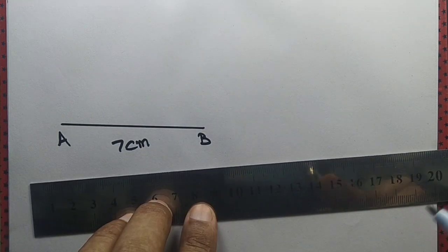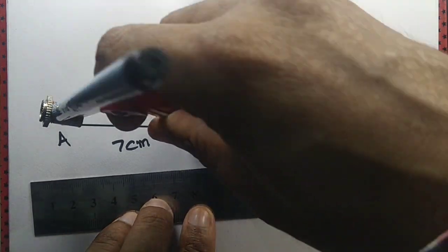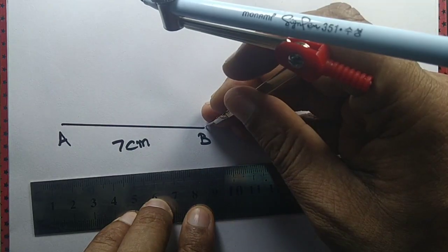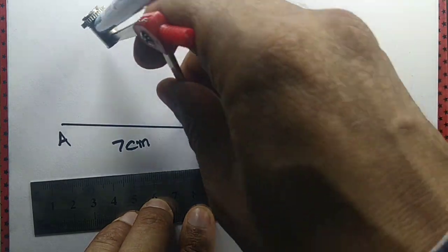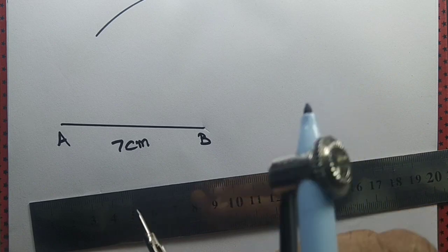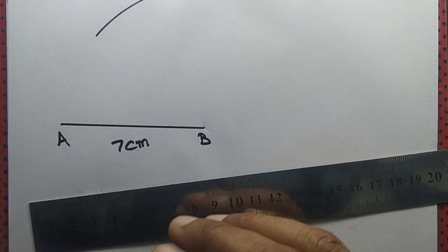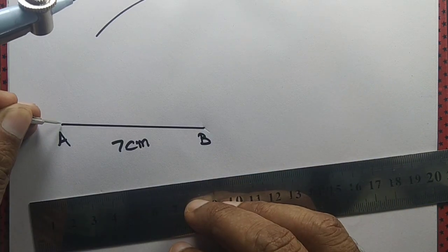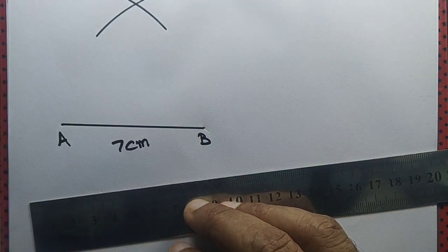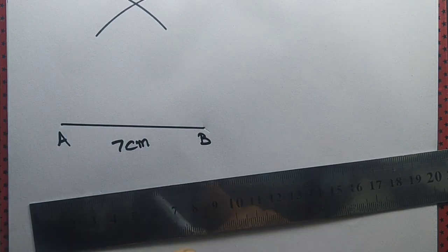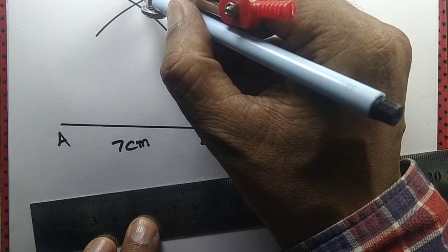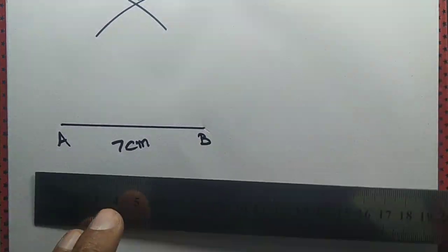From point B we draw an arc that measures 7 cm. From point A we draw another arc that measures 7 cm, and the two arcs intersect at a point — let's call it C.